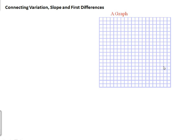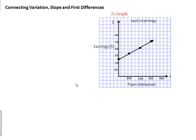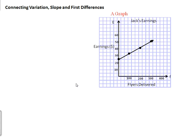Now let's represent this using a graph. Taking our values from the table of values, we set up a graph titled Jack's Earnings. The dependent variable is his earnings and the independent variable is the number of flyers delivered. We plot the four points that we found in our table of values.